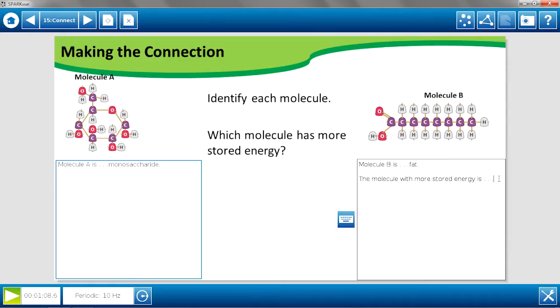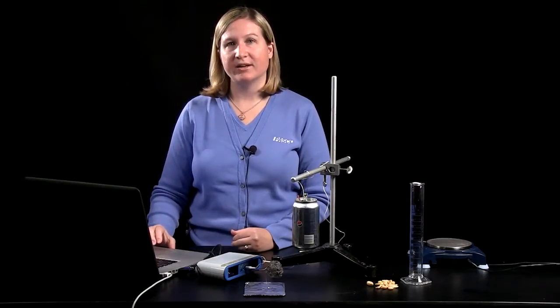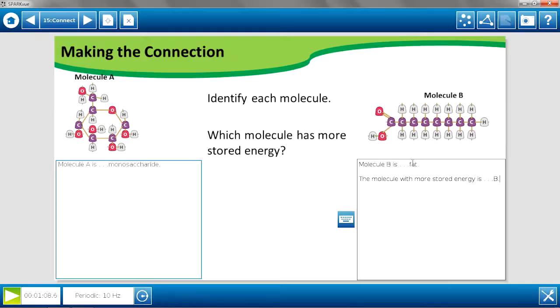And the answer here is molecule B. The large number of carbon-hydrogen bonds within a fat stores a large amount of energy, much more than the amount present in a carbohydrate or the amino acids of proteins.